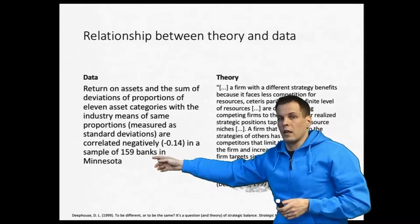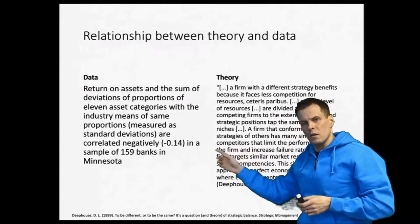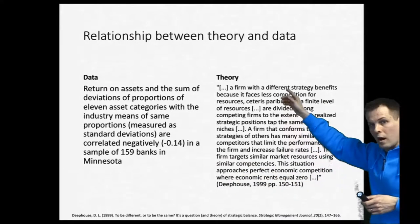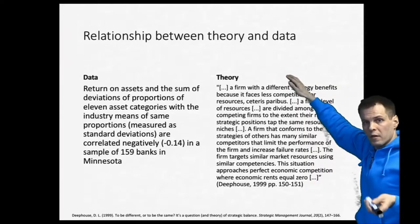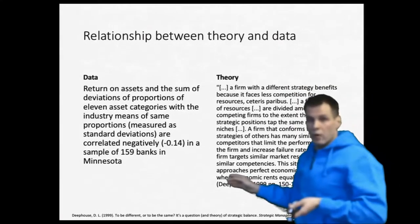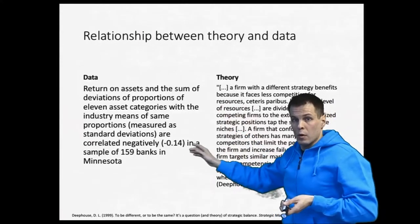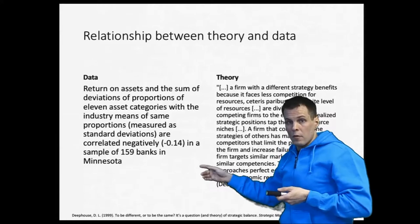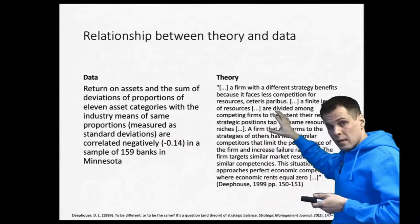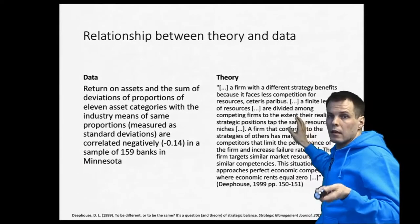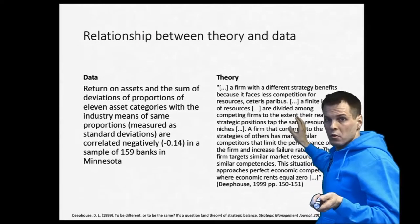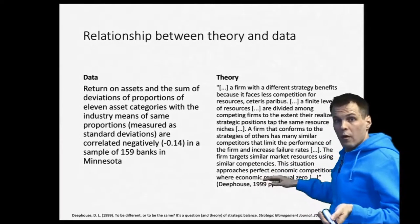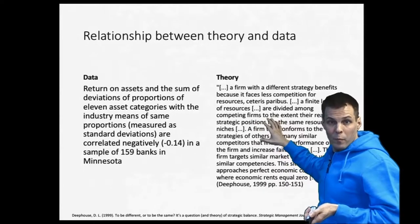They found a negative correlation. Can we, based on this small correlation, come up with an elaborate theory of how strategic deviation relates to profitability? The answer is no — the second option is correct. You cannot derive this kind of elaborate theory from this correlation alone, because a correlation only tells us there is a statistical association. It doesn't tell us whether it's causal, and particularly it doesn't answer the important why question. Theory typically needs to come from somewhere other than the numbers.